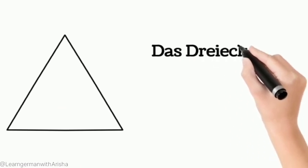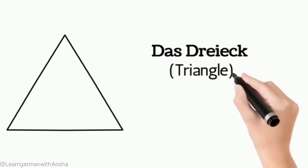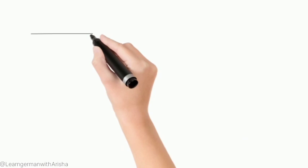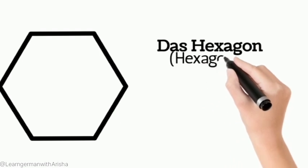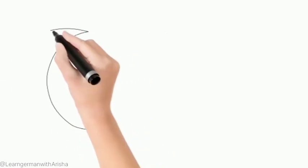Then our seventh one is hexagon, das Hexagon. Then our eighth one is moon, der Halbmond.